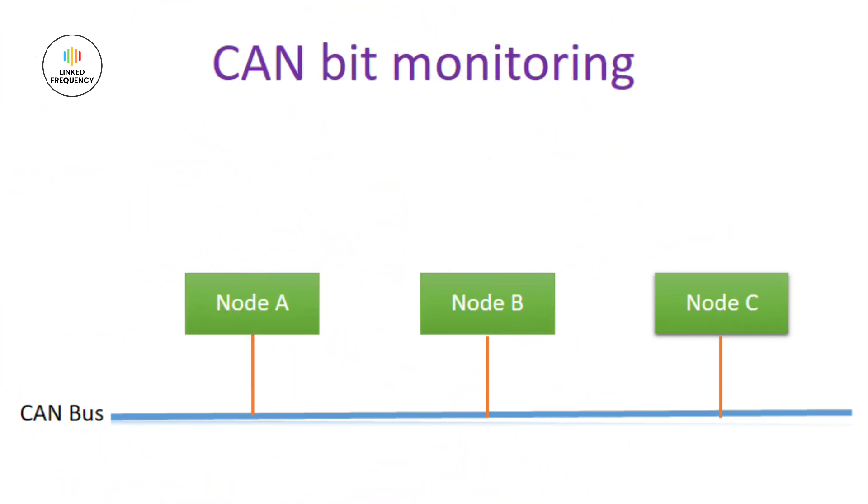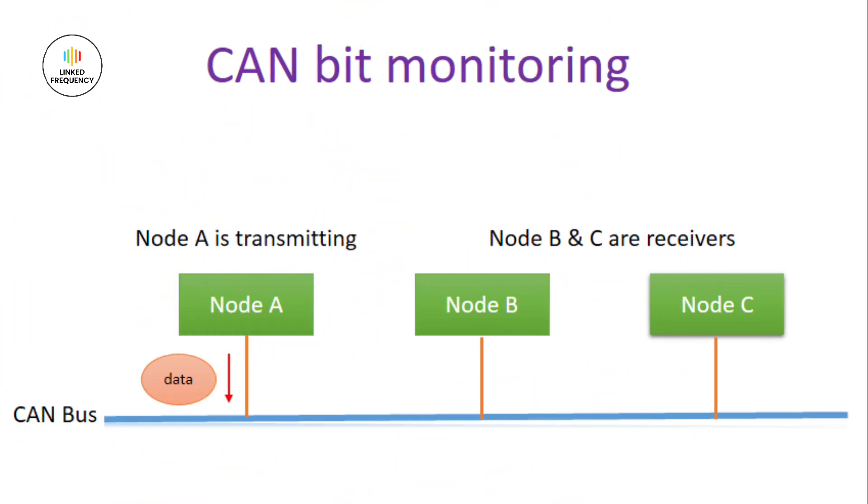Let's understand this concept with an example. Consider there are many nodes in the CAN network represented on screen: Node A, Node B, and Node C. For time saving, let's consider Node A is the transmitter. Node A sends data on the CAN bus, and the remaining nodes receive the data, including the transmitting Node A itself.